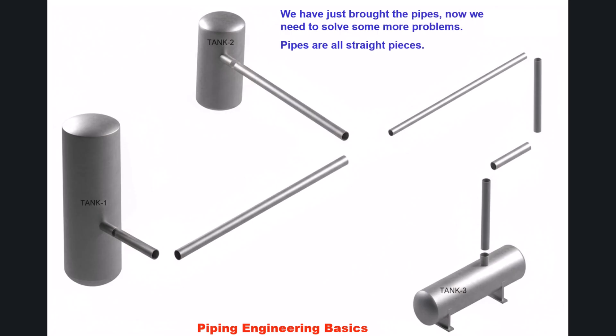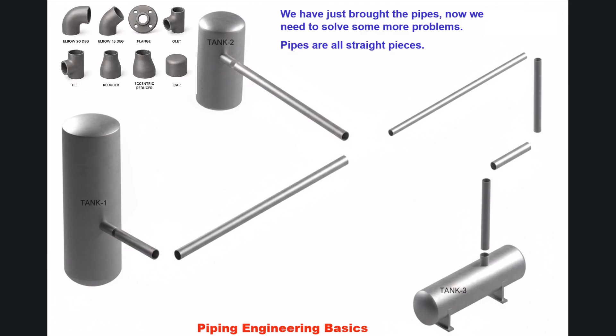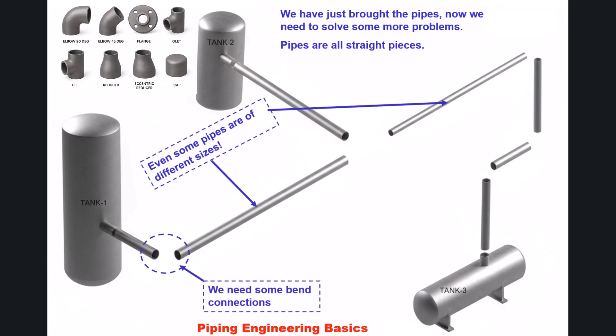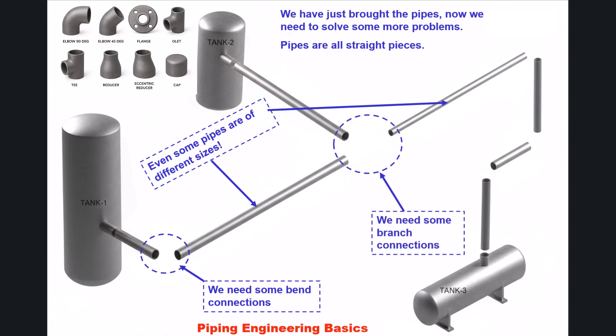Once we have the pipes, we need to solve some additional problems. Pipes are all straight pieces, so we need some bend connections. Also, some pipes are of different sizes, so we need some branch connections. To solve these problems, we need pipe components called pipe fittings.